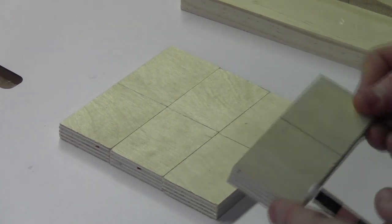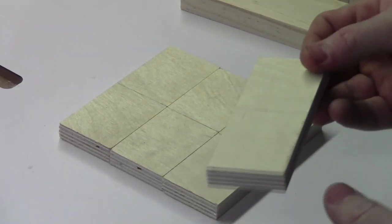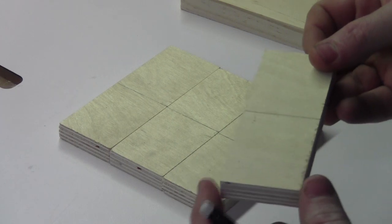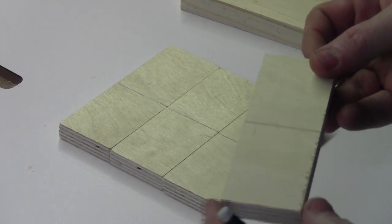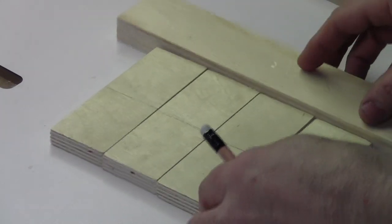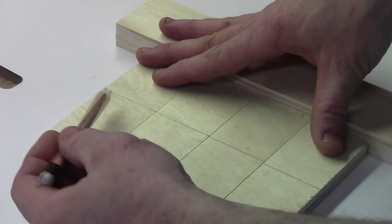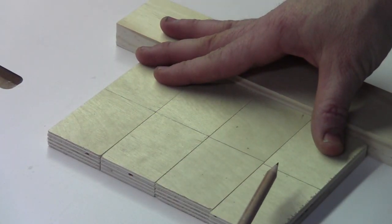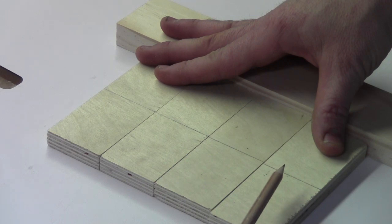Next you want to get some half inch spacer blocks. These are five inches in length and about an inch and a half wide. The width is not really a big deal. Just something wider than three quarters of an inch. What you want to do is go ahead and line all of them up and mark a line down the center, which is two and a half inches from each edge.